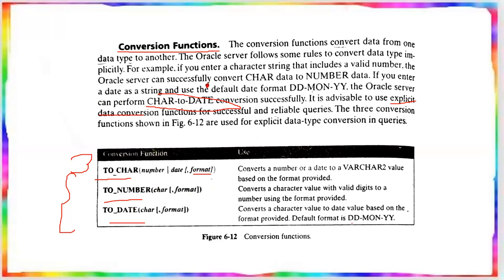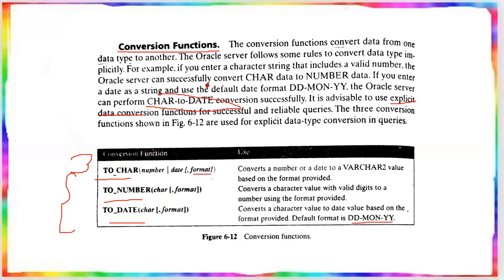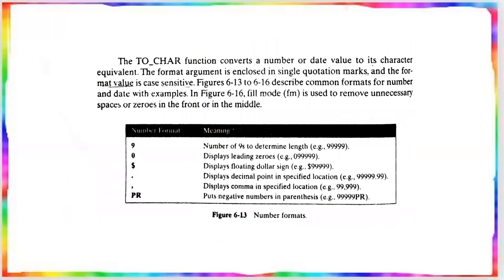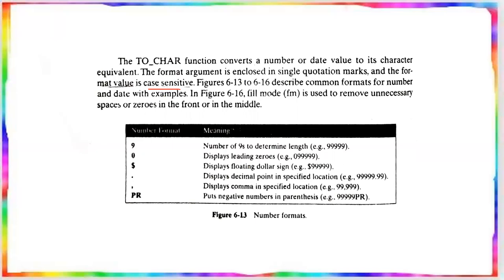The TO_CHAR function converts a number or date to its character equivalent. The format argument is enclosed in single quotation marks and is case sensitive. Common number formats include: 9 for digit length, 0 for leading zeros, $ for a floating dollar sign, a period for decimal point, and a comma for comma notation.